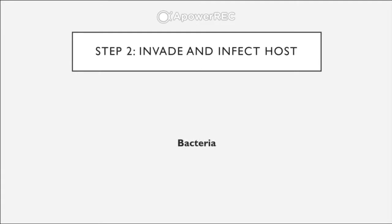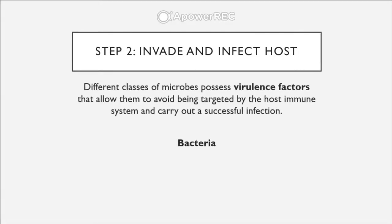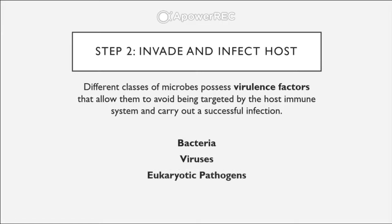Step 2: Invasion and infection of the host. Different classes of microbes possess different virulence factors — factors that allow microbes to avoid being targeted by the host immune system and carry out a successful infection. We're going to cover three groups: bacteria, viruses, and eukaryotic pathogens, and what types of virulence factors they possess.